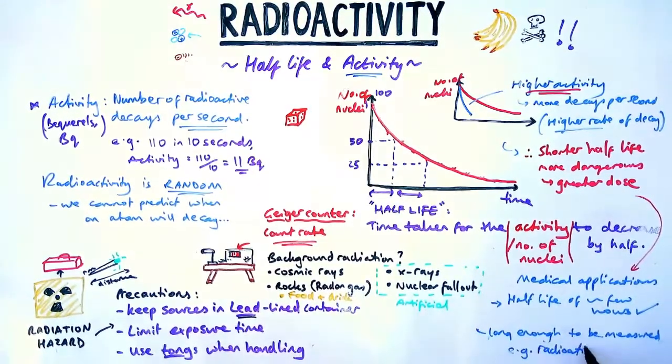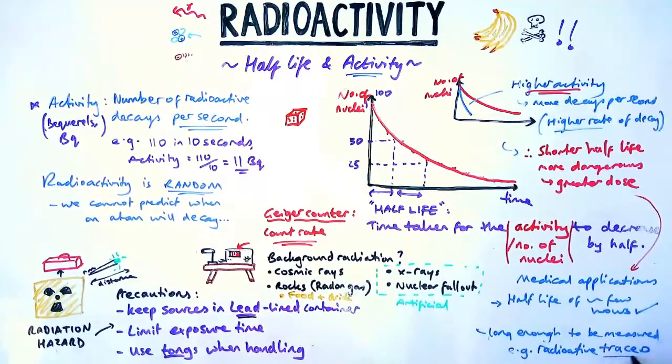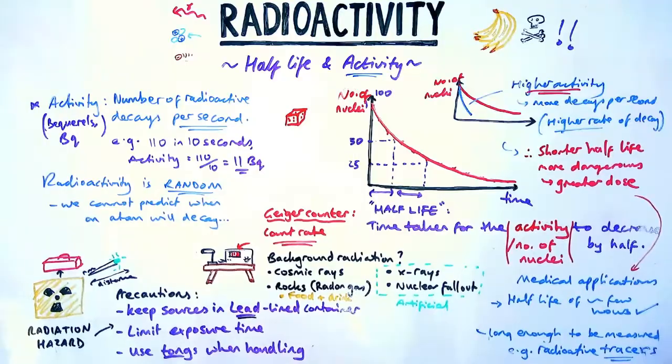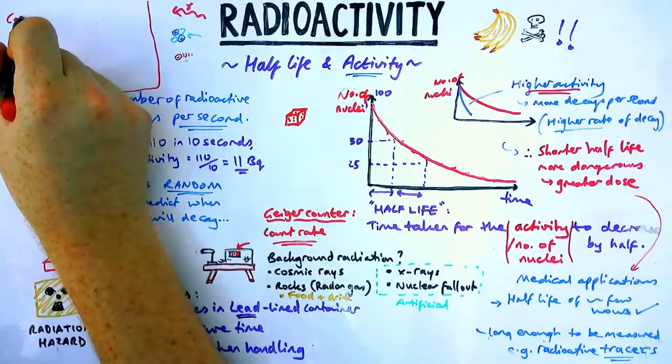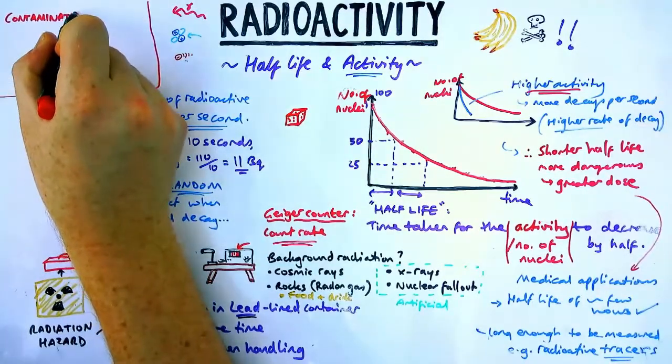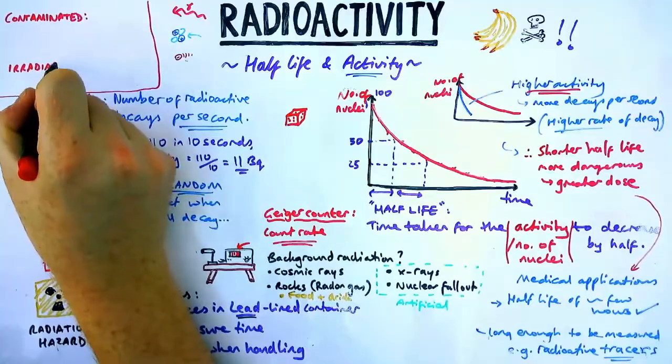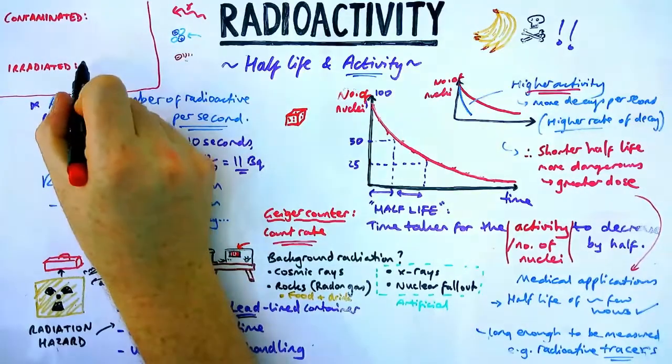Now if they're left in the body for too long, you have an issue called contamination. So you need to know the difference between two keywords. One's called contamination or contaminated, and the other is called irradiated. So both of them are involved when you're talking about radioactive sources.